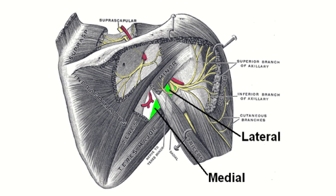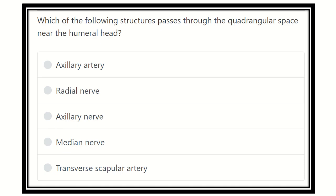Hello everyone, welcome to another question and answer session for the MRCS exam. The question is: which of the following structures passes through the quadrangular space near the humeral head? The options are: axillary artery, radial nerve, axillary nerve, median nerve, and transverse scapular artery.